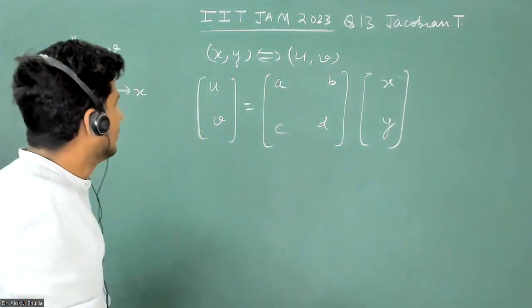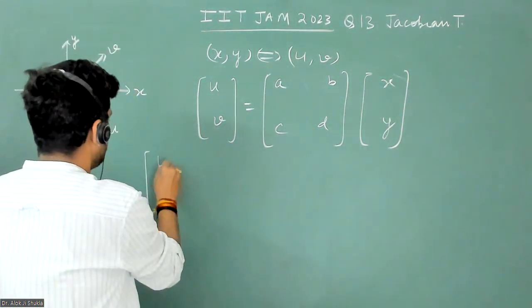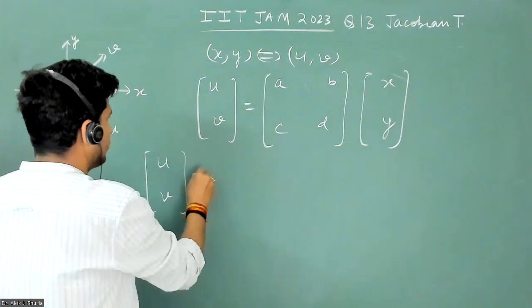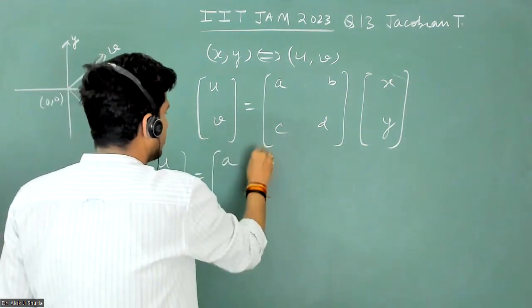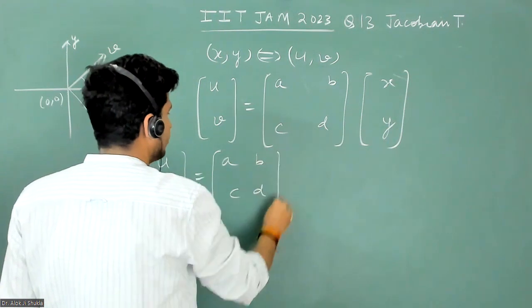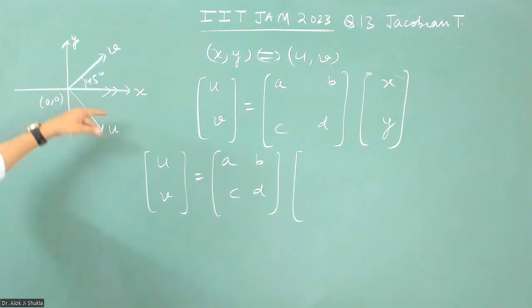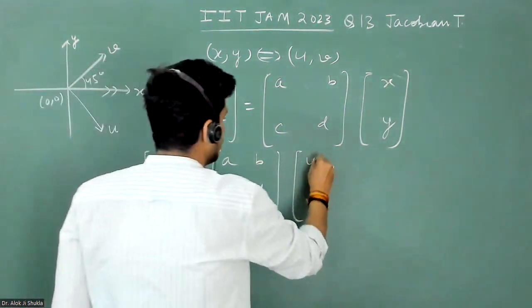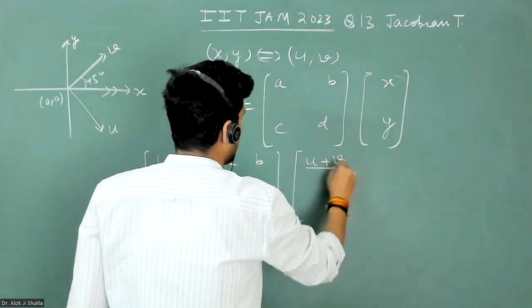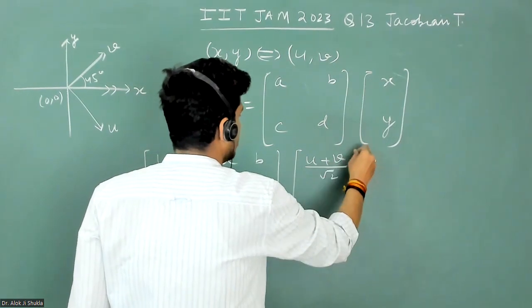So just see the figure and write U, V is equal to the matrix A, B, C, D. And what you get here: X is U plus V cos 45, which is U plus V by root two. One term is this.